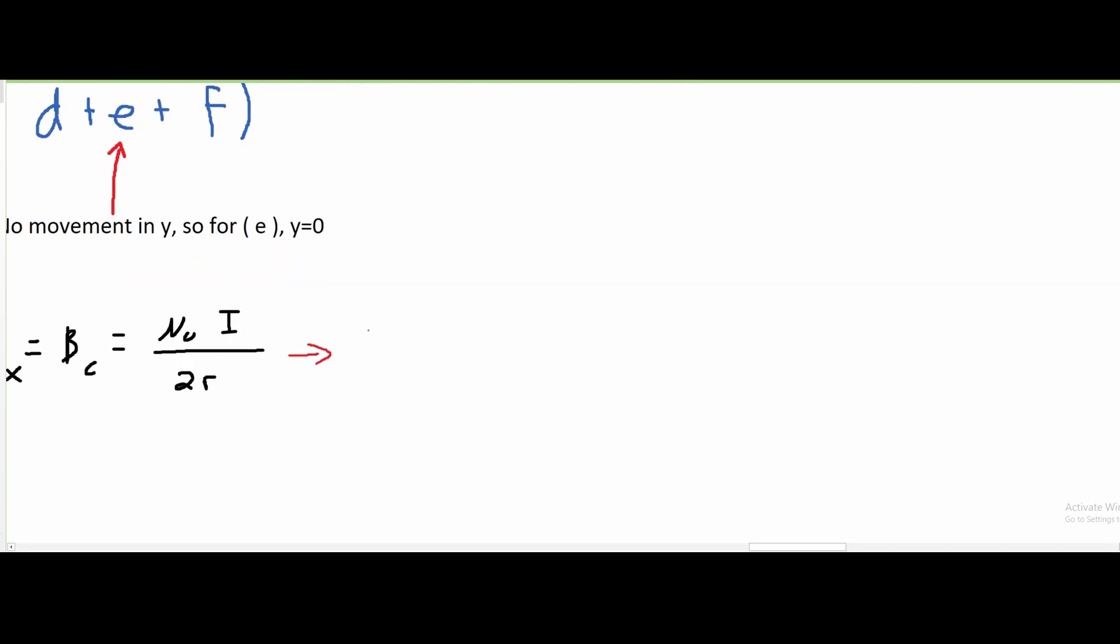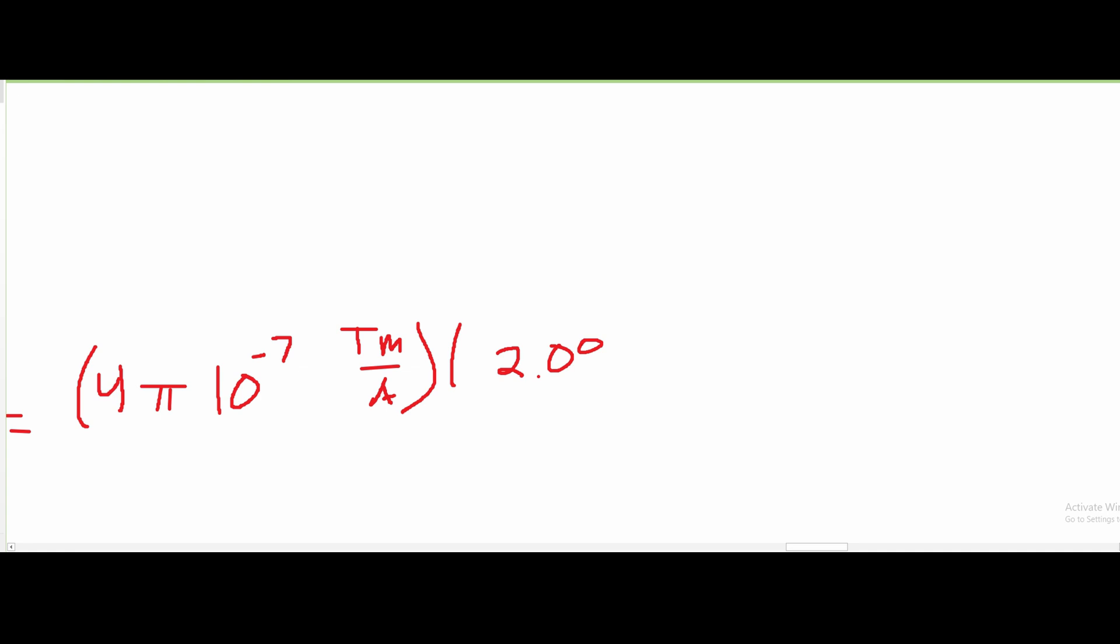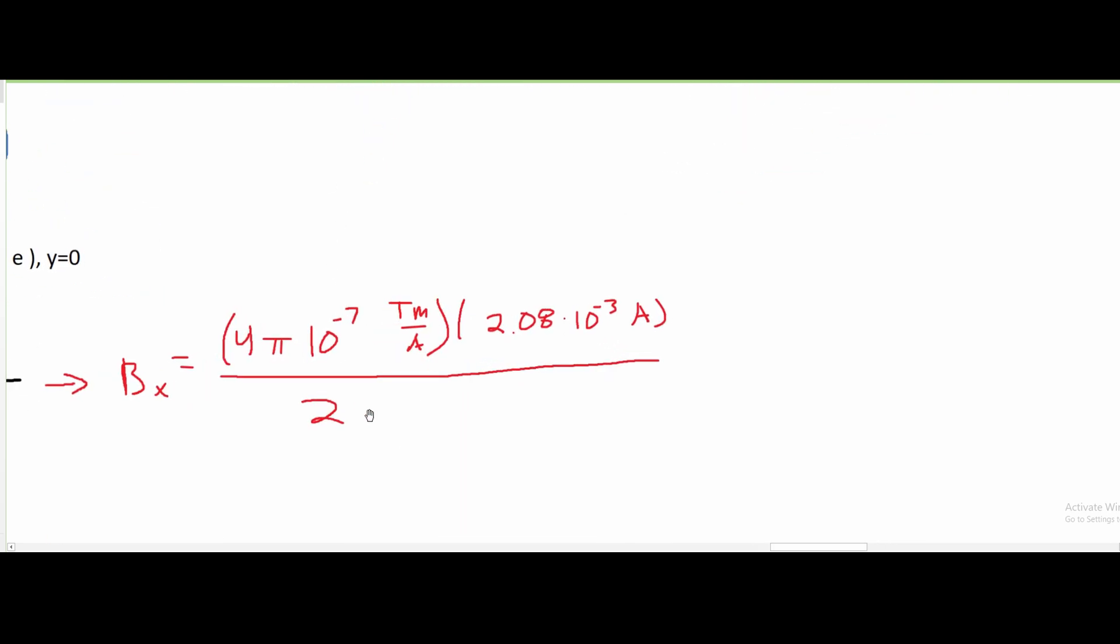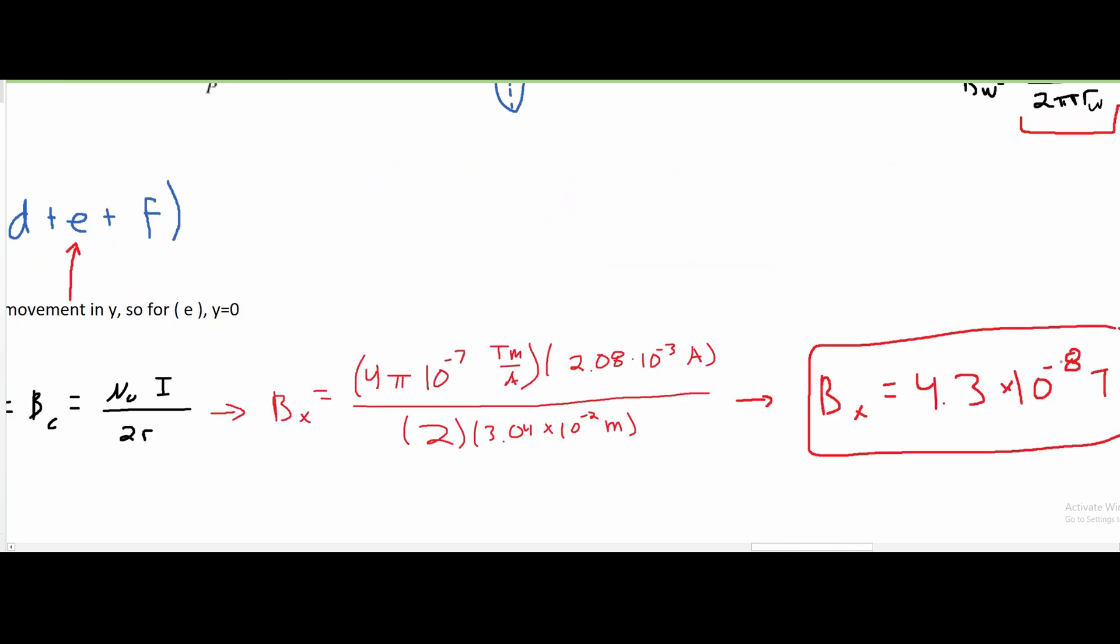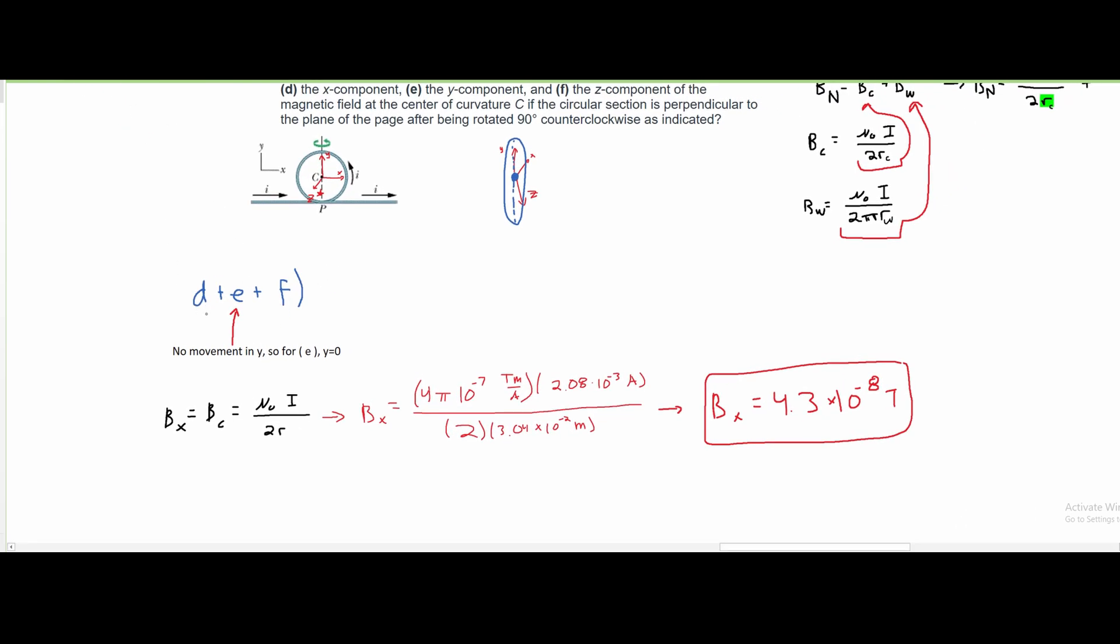We can plug in our values and see that our B of x is going to equal 4π times 10 to the negative 7 tesla meters over amps, multiplied by our current which we know to be 2.08 times 10 to the negative 3 amps, divided by 2 times our r, and our r is 3.04 centimeters or 3.04 times 10 to the negative 2 meters. And this is going to give us B of x equals approximately 4.3 times 10 to the negative 8 teslas. This is the answer for d.